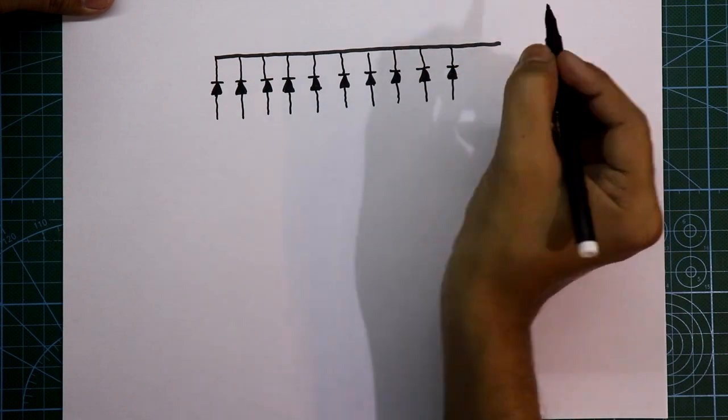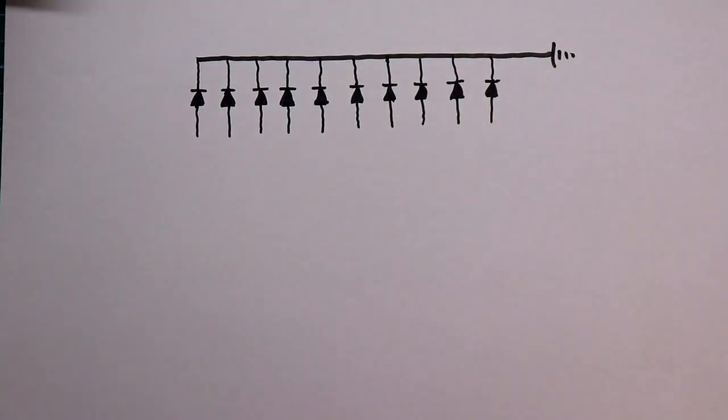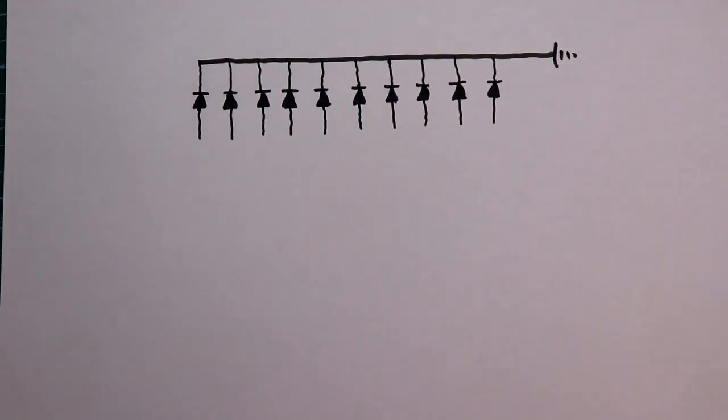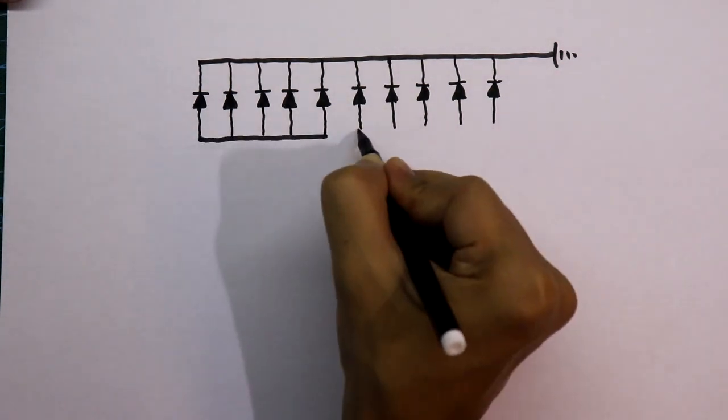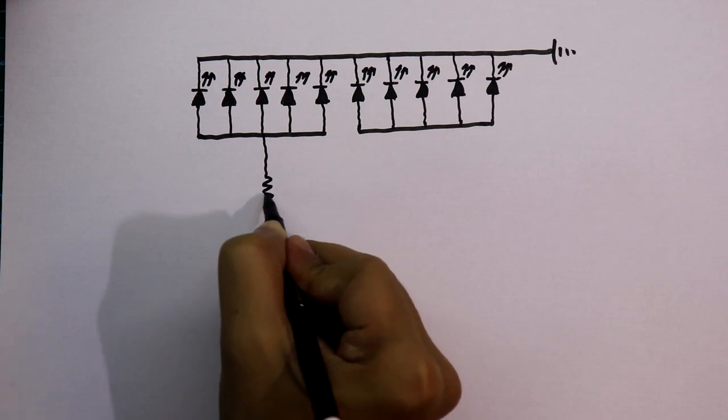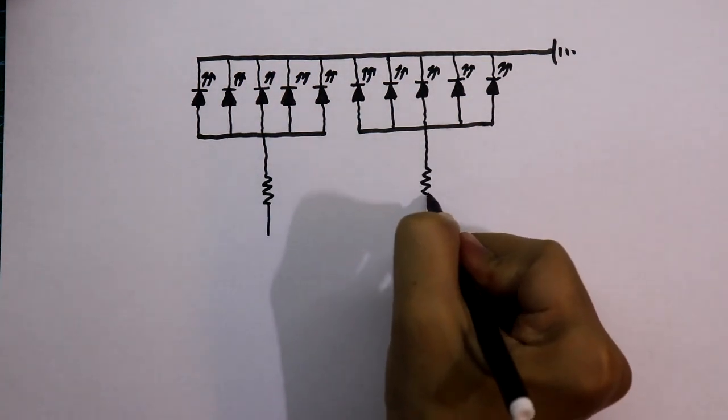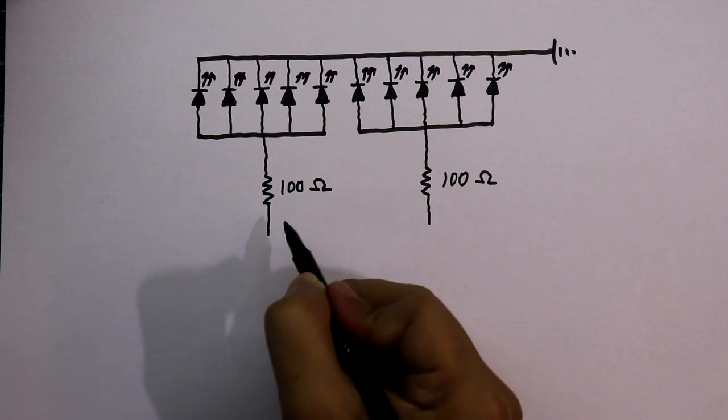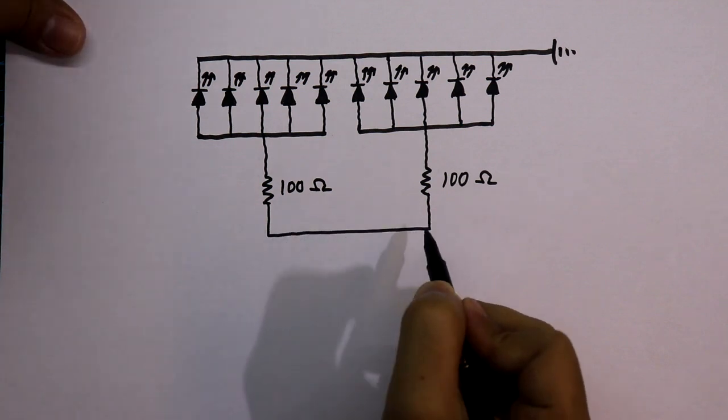The cathode pin of all the LEDs are connected to the ground and we will group the anode pin of LED by 5. After this the common anode are connected to the 100 ohms resistor and in the other side both are connected together.